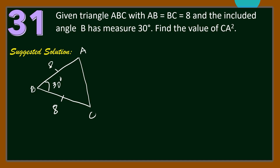Since we have a triangle given two sides and an included angle, to find the measure of the side opposite the given angle, we will use the Cosine Law. Using the Cosine Law, we have AC squared is equal to AB squared, that is 8 squared, plus BC squared, that is also 8 squared, minus 2 times the length AB and BC, that will be 2 times 8 times 8, times cosine of 30 degrees, that's angle B.